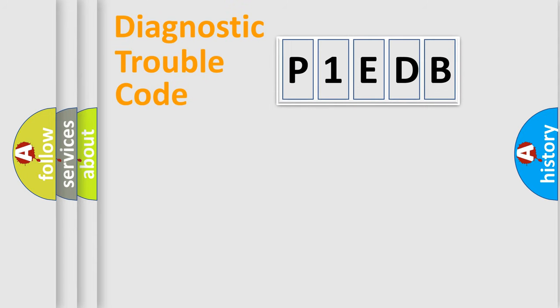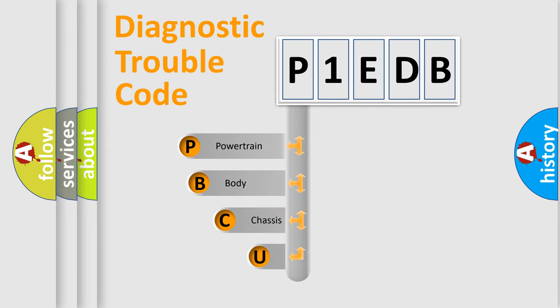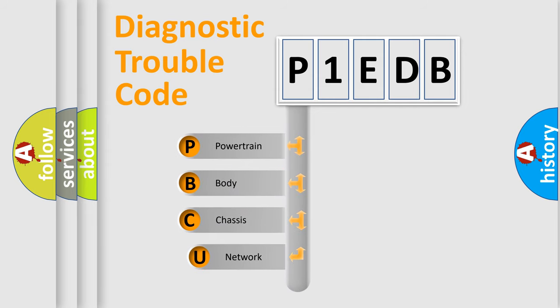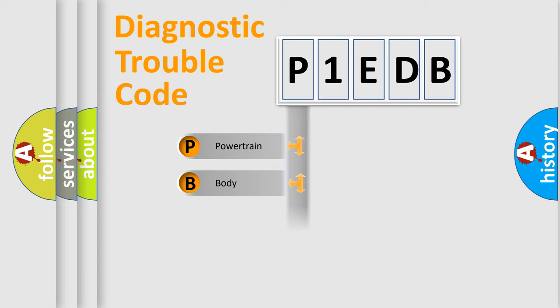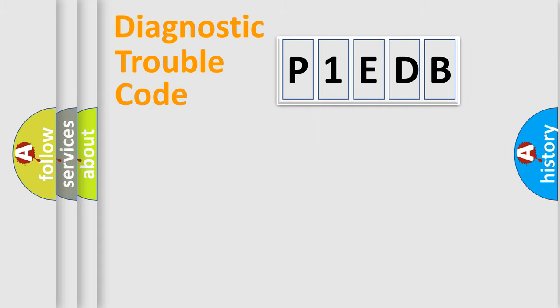First, let's look at the history of diagnostic fault code composition according to the OBD2 protocol, which is unified for all automakers since 2000. We divide the electric system of the automobile into four basic units: Powertrain, Body, Chassis, and Network. This distribution is defined in the first character of the code.